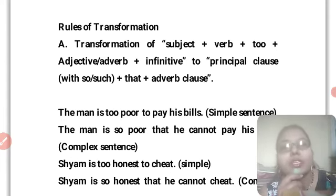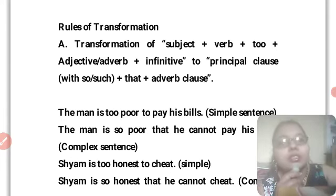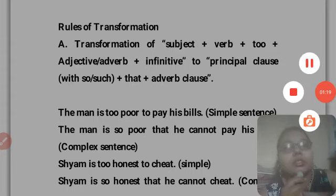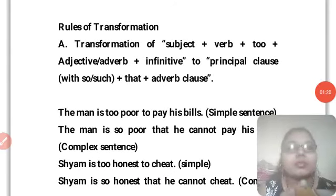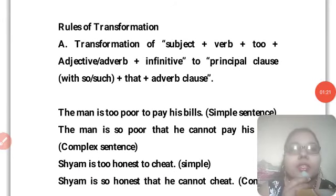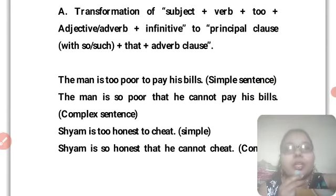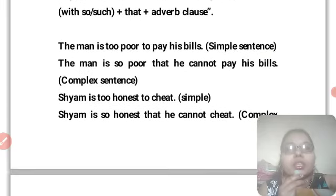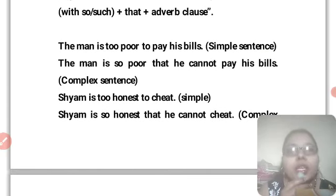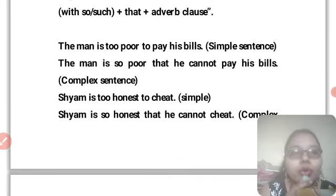For example: 'The man is too poor to pay his bill' — this is a simple sentence. It can be transformed into a complex sentence: 'The man is so poor that he cannot pay his bill.'